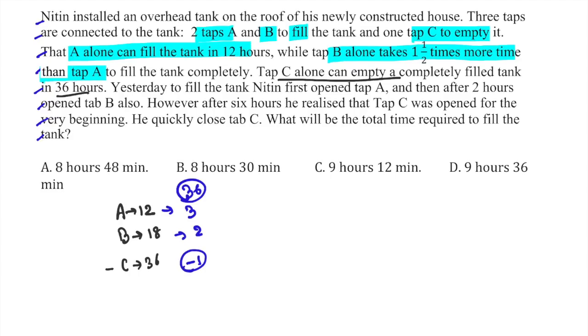So this is the efficiency. Now what happens: first open tap A, work for 2 hours. Then A is still open, I opened B after 2 hours. And after 6 hours I realized tap C was opened already, so tap C was open from the